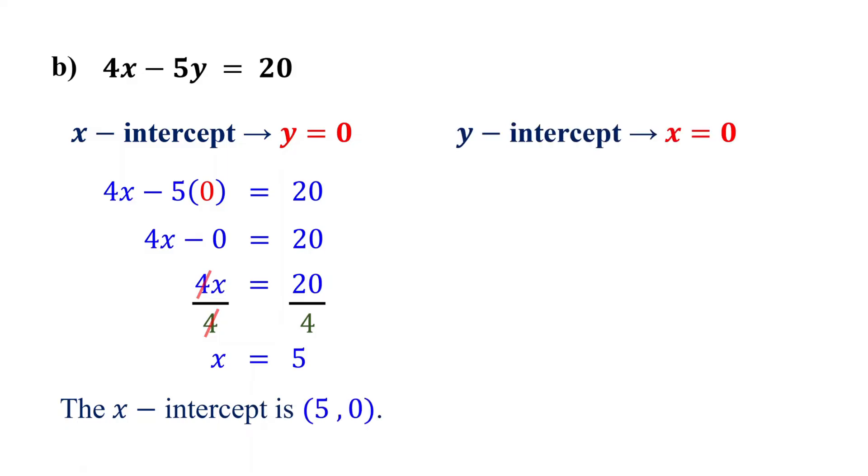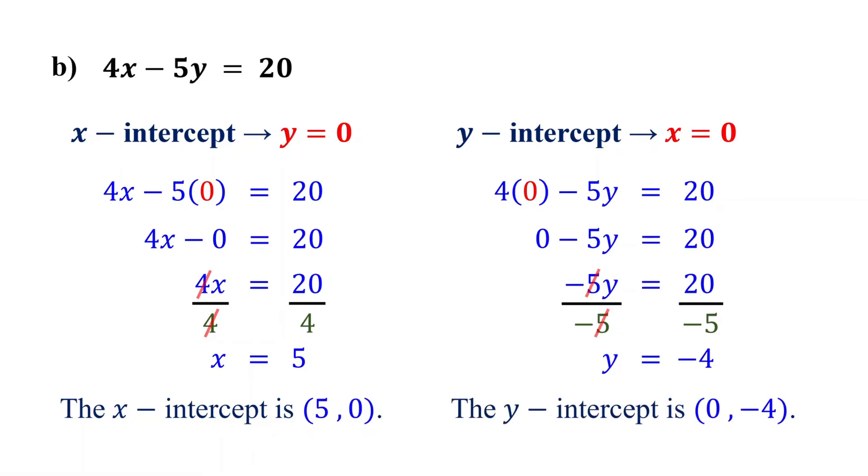The y-intercept occurs when x is 0. So, set x to 0 and solve for y. 4 times 0 is 0. Divide both sides by negative 5, and you find that y equals negative 4. So, the y-intercept is the point (0, -4).